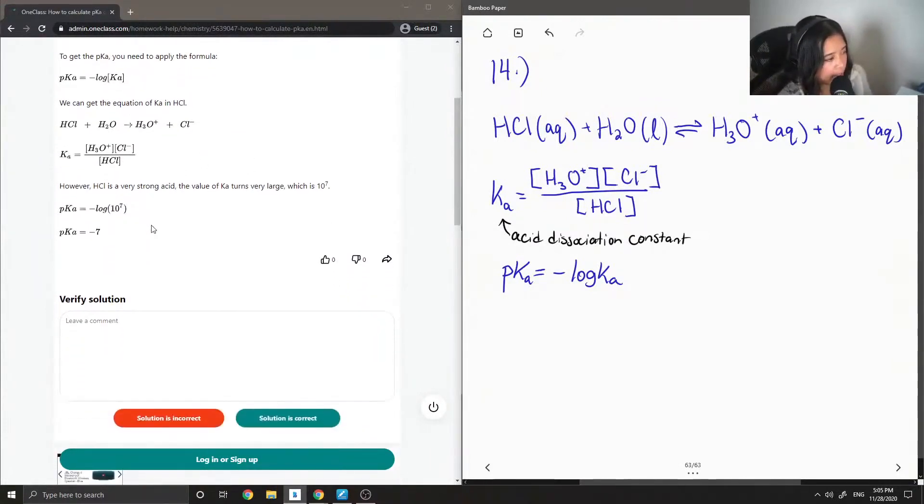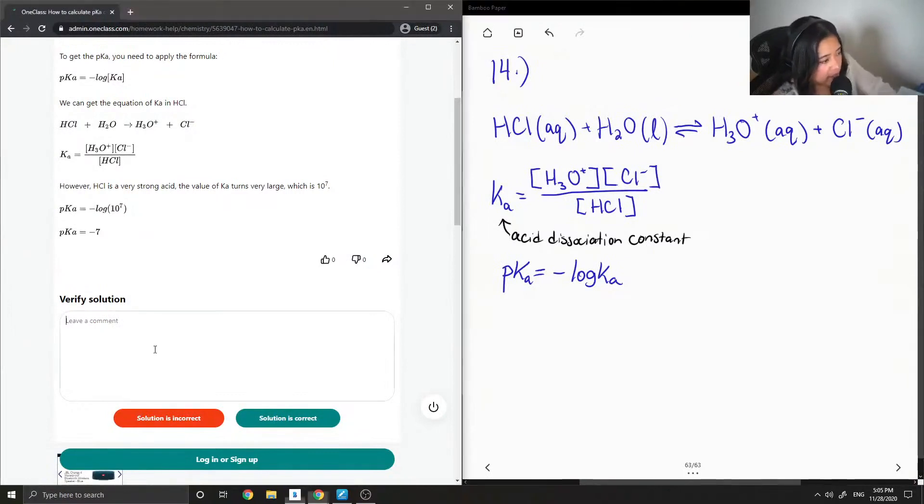However, HCl is a very strong acid. The value of Ka is very large, which is 10 to the 7. So when we take the negative log of 10 to the 7, we get a pKa of around negative 7. So this solution is correct.